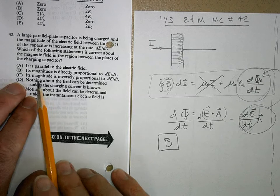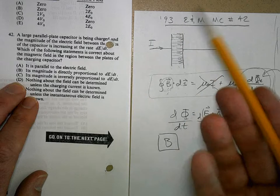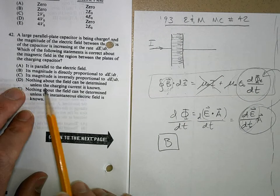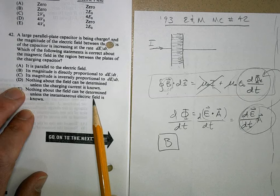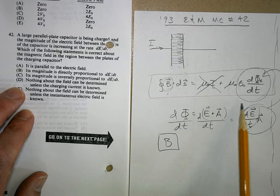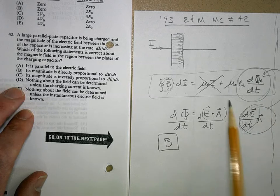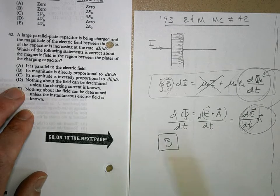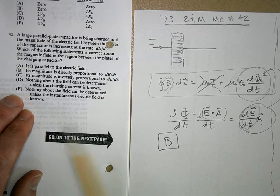And C: its magnitude is inversely proportional. No, if B is correct, C has to be wrong. D: nothing about the field can be determined unless the charging current is known. Well, there's nothing in here about the charging current. Actually, you can figure out what the current is if I give you the area of the capacitor.